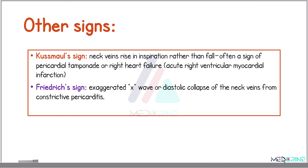Other signs related to the jugular venous pressure are the Kussmaul sign and the Friedrich sign. The Kussmaul sign is when jugular venous pressure rises on inspiration, and is often seen in pericardial tamponade or right heart failure. The Friedrich sign is an exaggerated X descent — a diastolic collapse of the neck veins — from constrictive pericarditis.